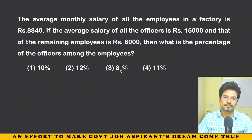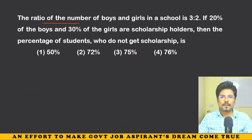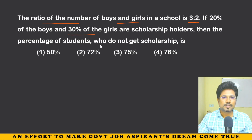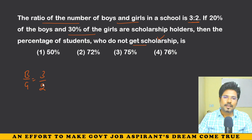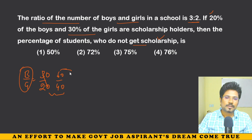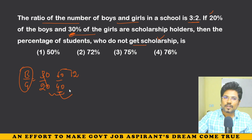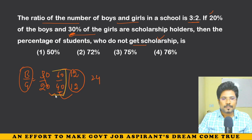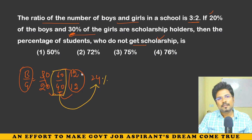Now see: the ratio of number of boys and girls in a school is 3 to 2. If 20% of boys and 30% of girls are scholarship holders, then what percentage of students do not get a scholarship? Assume total students = 100: boys = 60, girls = 40. 20% of 60 = 12, 30% of 40 = 12. Total scholarship holders = 24 out of 100. So 76% do not get scholarship.